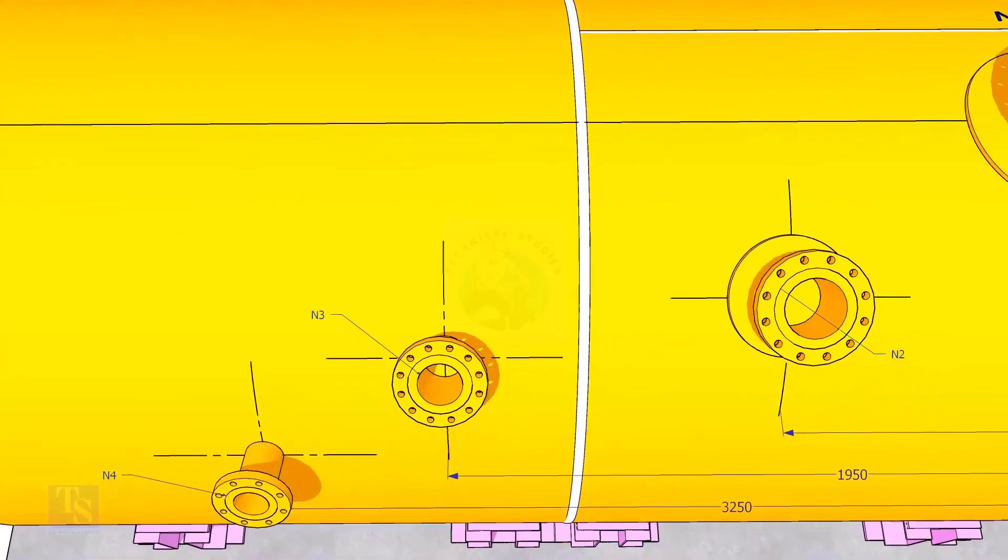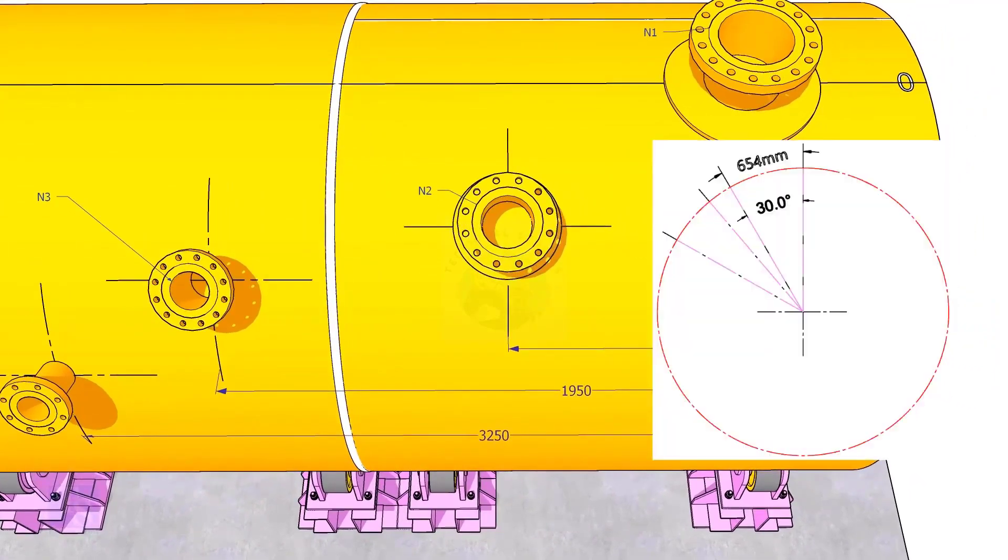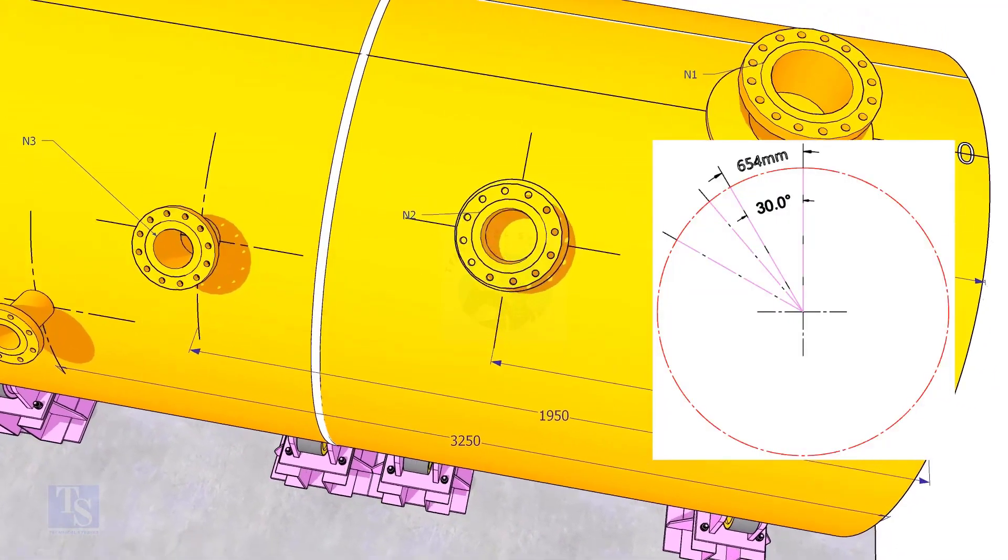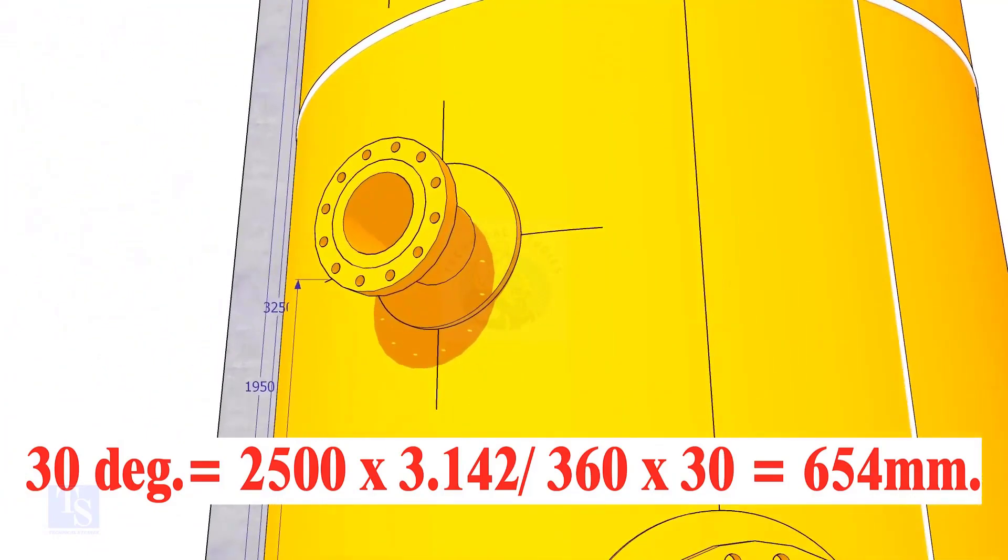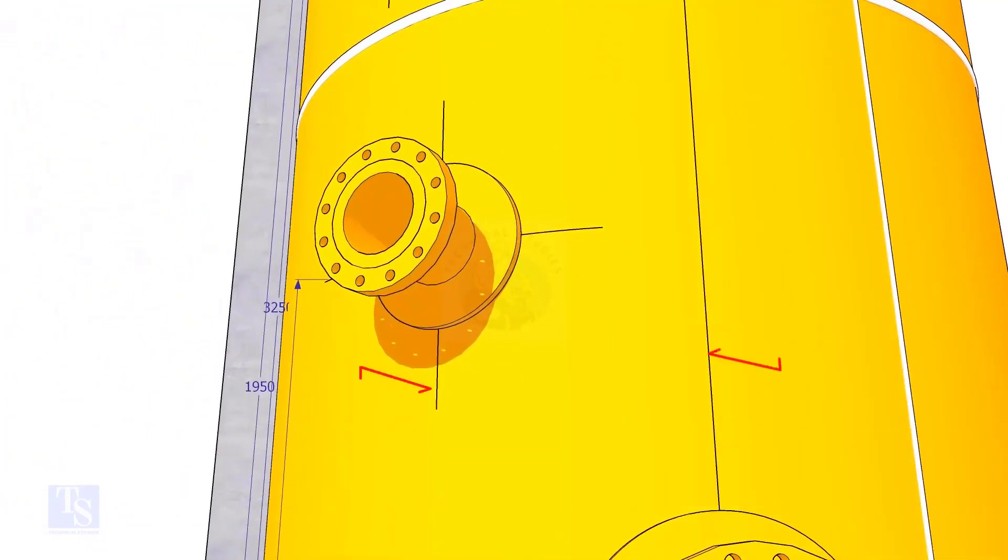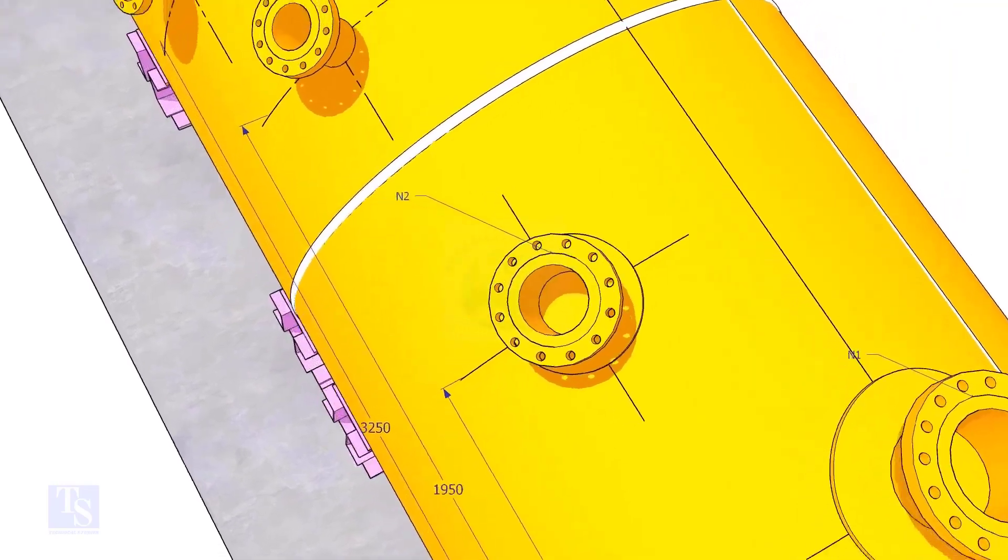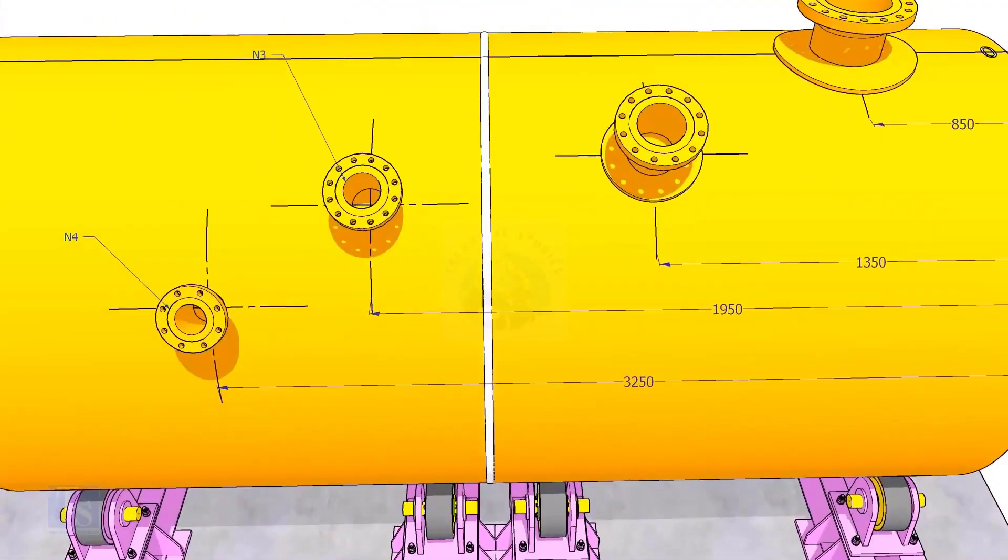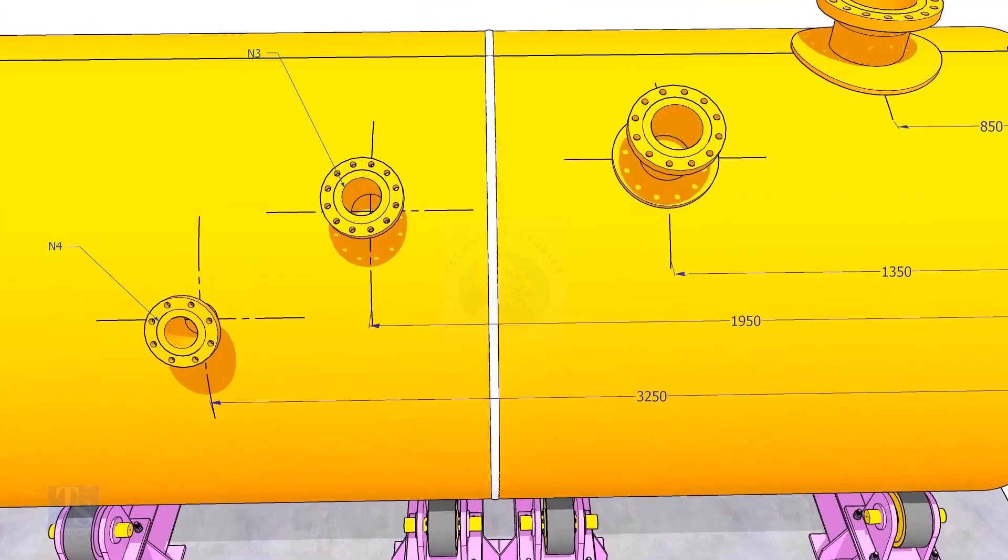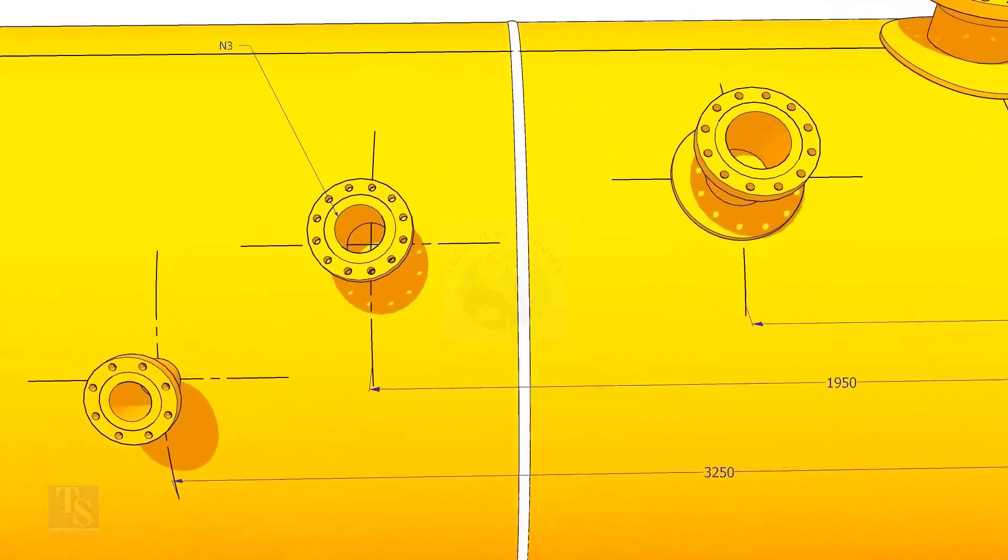Let us mark the center of nozzle N2. It comes on 30 degrees anti-clockwise. Convert 30 degrees to arc length. Mark this dimension at two locations as shown and draw a line. Draw an arc of 1350 millimeters from the edge of the shell intersecting this line. This point is the center of the nozzle N2.